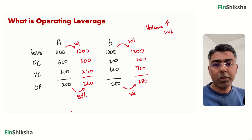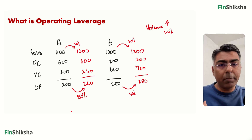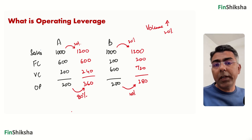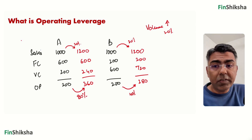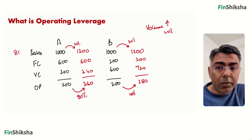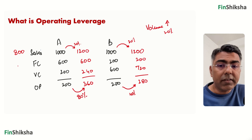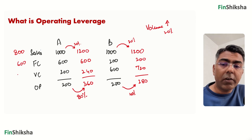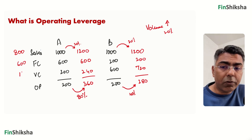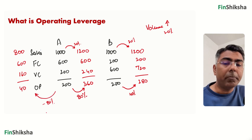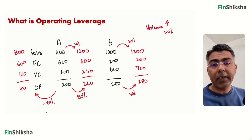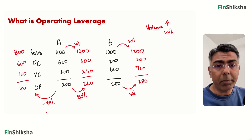Where fixed cost is higher, your volatility will be higher — your profit change will be bigger. This is a double-edged sword. If sales goes down by 20%, going to 800 in the first case, fixed cost remains 600, variable cost goes down 20% to 160, and operating profit drops to 40 — a dip of 80%. In the second company's case, it would be a 40% drop if sales goes down by 20%.